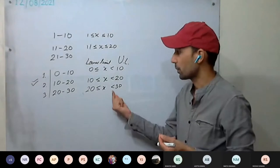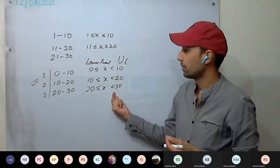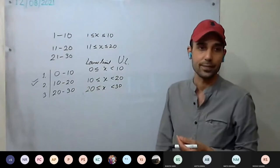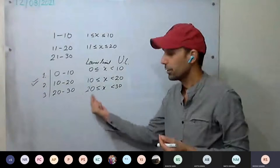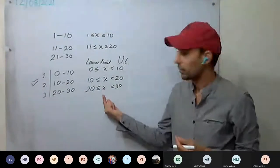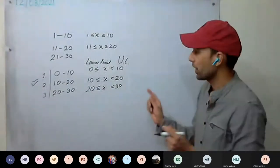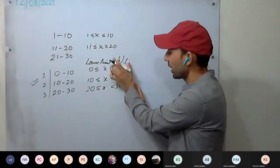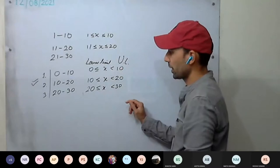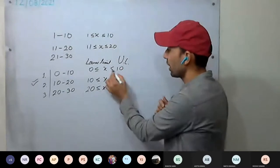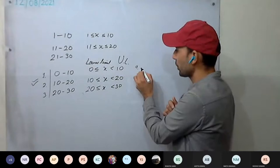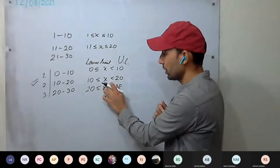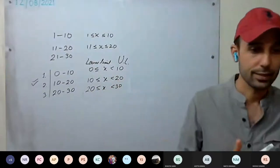So there is continuity, therefore we are going to follow exclusive class intervals mainly — upper limits are excluded in this form. Where will 20 go? Third class. We exclude the upper limit, so up to 9.999 will enter; as x equals 10, it goes to the second class.